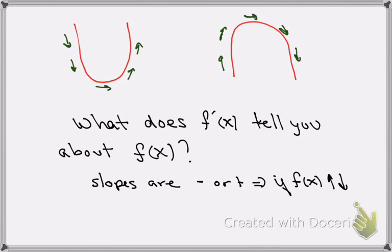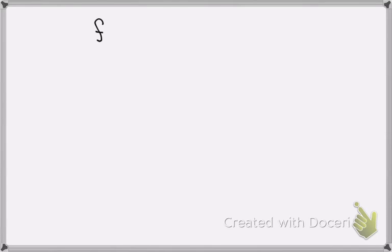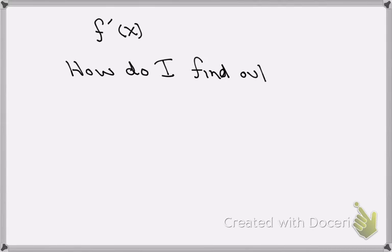So if I have a function f, I can find out where that function f is increasing or decreasing from f's derivative. The tool I'm going to use to do that is the sign chart. Suppose I had f prime of x — how do I find out where f prime of x is increasing or decreasing?